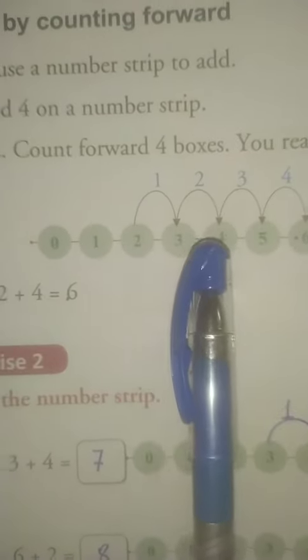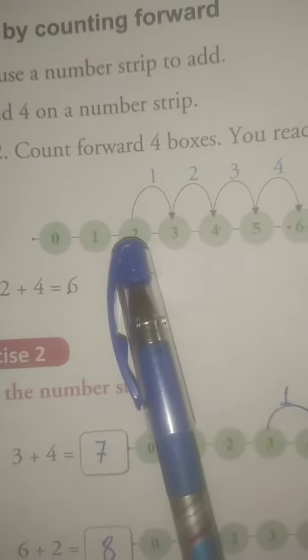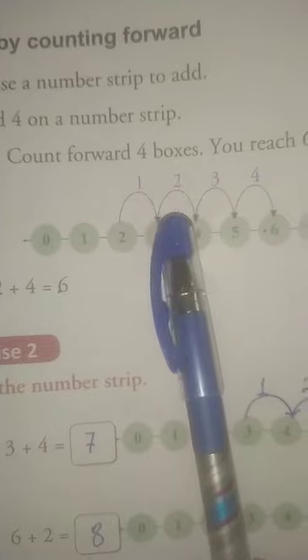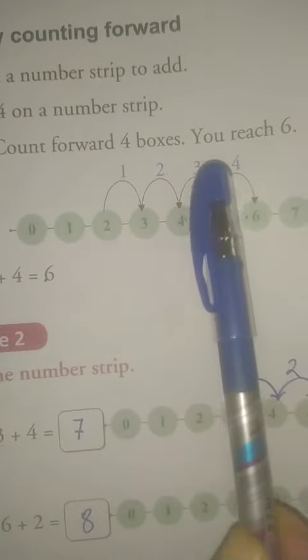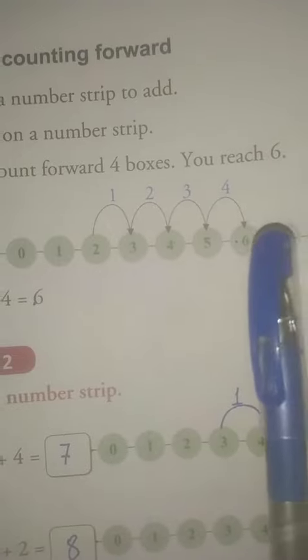When we have to add 2 plus 4, then we have to start at 2 and count forward 4 boxes. 1, 2, 3, 4. And what number we reach? We reach number 6.